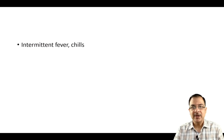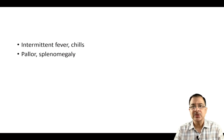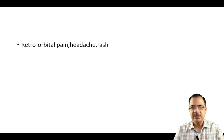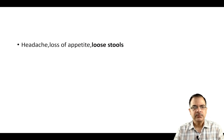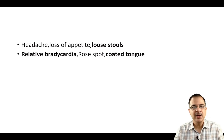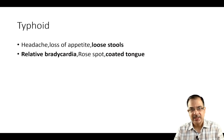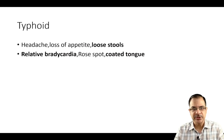For acute undifferentiated fevers: intermittent fever with characteristic chills, pallor, and splenomegaly — pallor due to red blood cell hemolysis especially seen in falciparum malaria — indicates malaria. Retro-orbital pain, headache, rash, positive tourniquet test, and petechiae indicate dengue fever. Headache, loss of appetite, loose stools, relative bradycardia, rose spots, or coated tongue are highly specific for typhoid fever — especially useful in resource-limited settings where blood tests are not available.